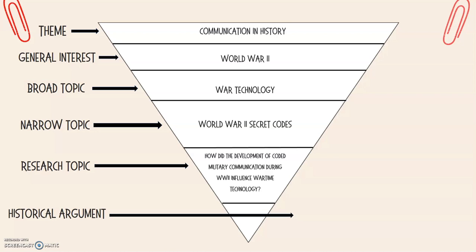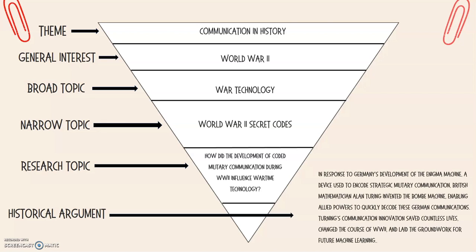This really helps me set the scene for all the different types of historical context research I'll have to do — what kind of military communication was happening during World War II and did it influence how we produced wartime technology? This eventually leads me to my historical argument: in response to Germany's development of the Enigma machine, a device used to encode strategic military communication, British mathematician Alan Turing invented the Bombe machine, which enabled Allied powers to quickly decode German communication. Turing's communication innovation saved countless lives, changed the course of World War II, and laid the groundwork for future machine learning. Completing this cone helps me narrow down my topic based on the theme, but also helps me figure out the different areas I'll need to research for my historical context.